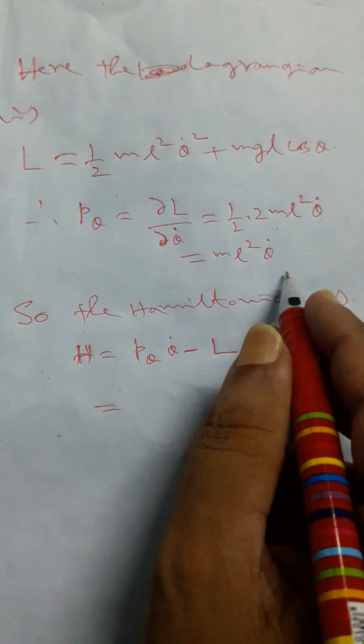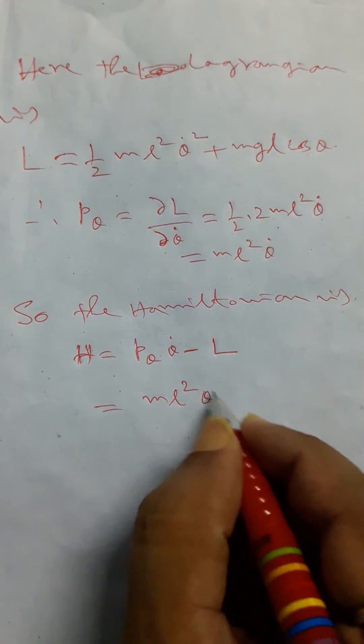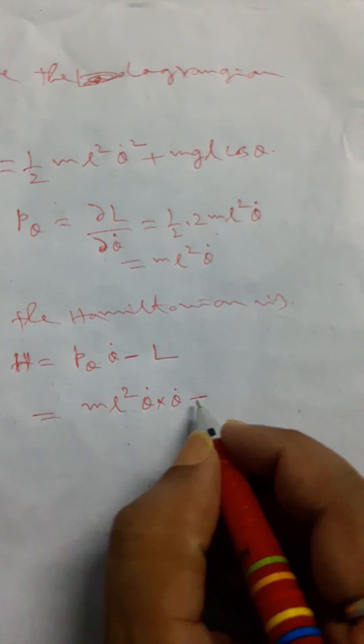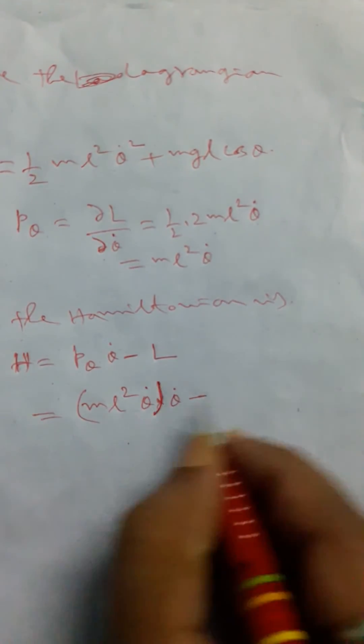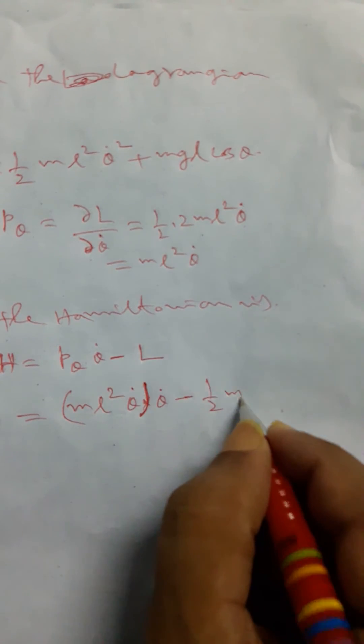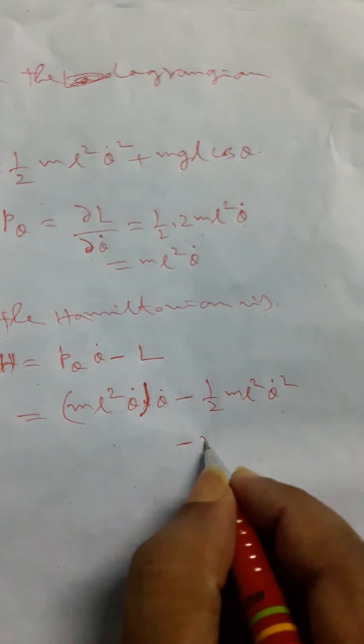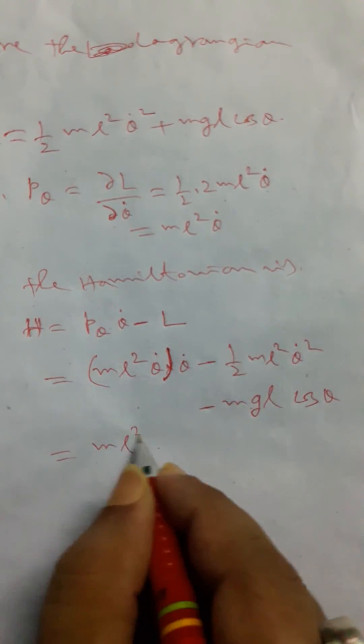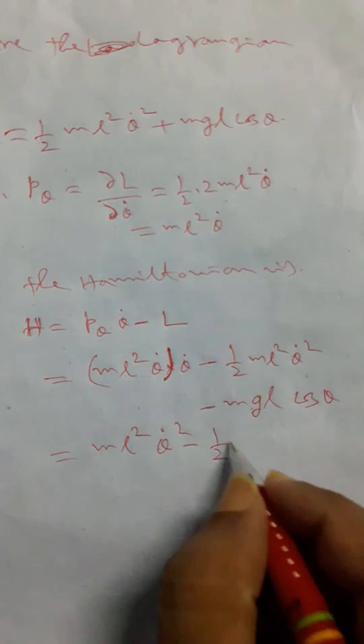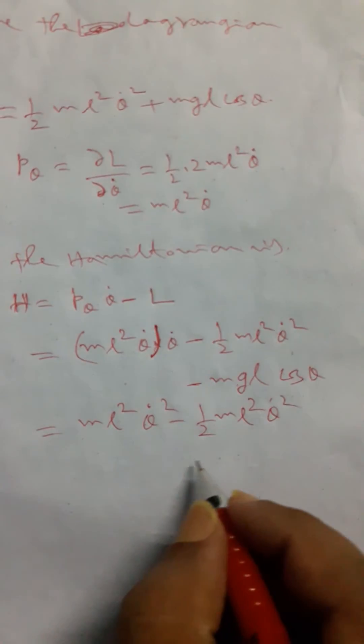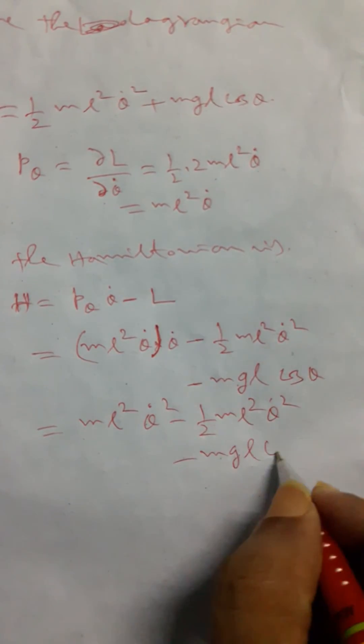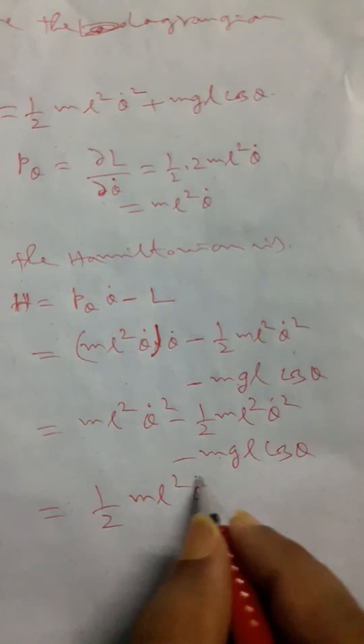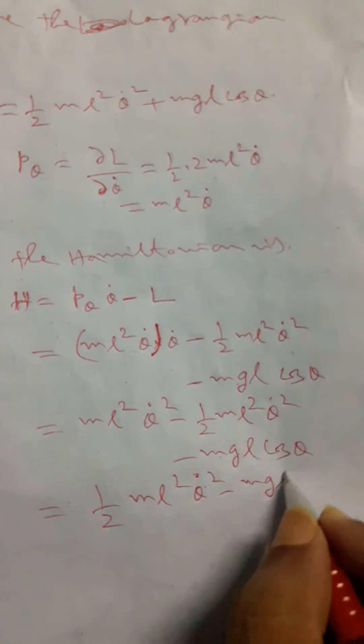Finally, we substitute the value ML²θ̇ into θ̇ minus the Lagrangian: ML²θ̇ × θ̇ - (1/2 ML²θ̇² + MGL cos θ). After subtraction, it will be 1/2 ML²θ̇² - MGL cos θ.